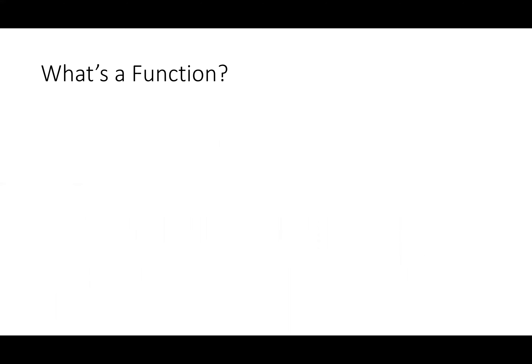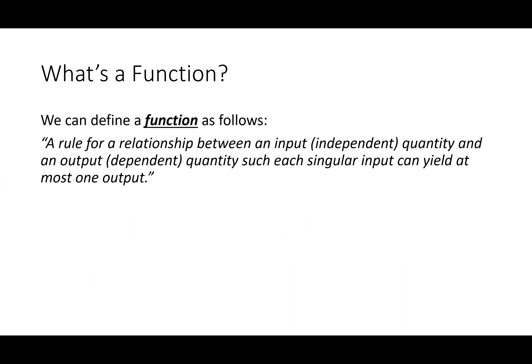So we're going to start with how we define a function. The textbook defines a function as a rule for a relationship between an input — we call that our independent quantity — and an output, our dependent quantity, such that each singular input can yield at most one output. I really want to emphasize 'at most one.' It effectively means that we can have no output, which just means the independent quantity wasn't in the domain of the function.